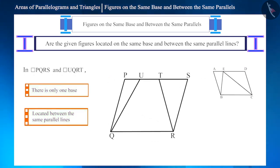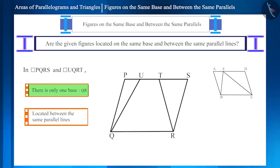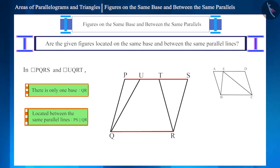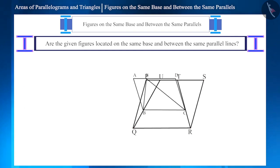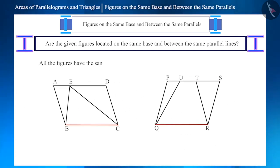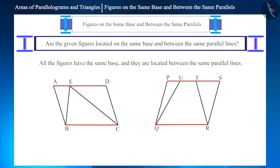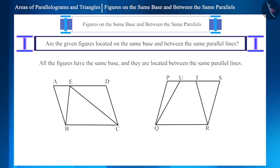Similarly, in the second figure both parallelograms have the same base QR and are also located between the two parallel lines PS and QR, where QR is the base and QR is parallel to PS. All these figures have the same base and they are located between the same parallel lines, so the height of all these figures is also the same.